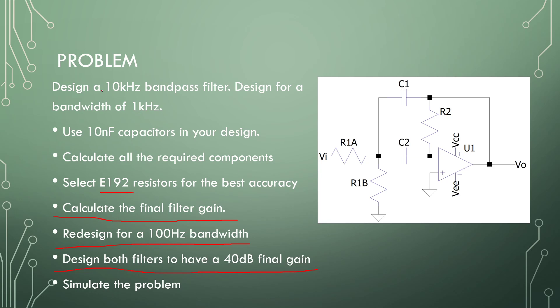Then, both filters to have a 40 dB final gain. So it's first 10 kHz with 1 kHz bandwidth, then with 100 Hz bandwidth, and then both for 40 dB passband gain. Simulate the problems. You can pause the video here or go back to the equations and design a bandpass filter, and we will look at the solution momentarily.